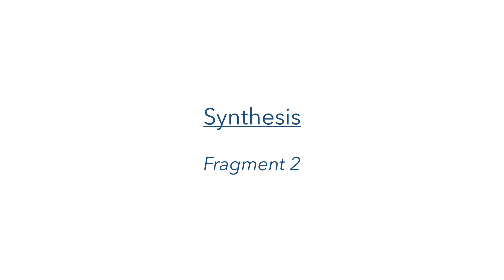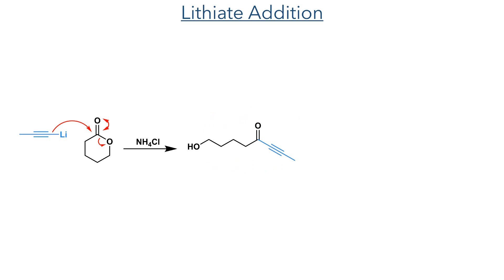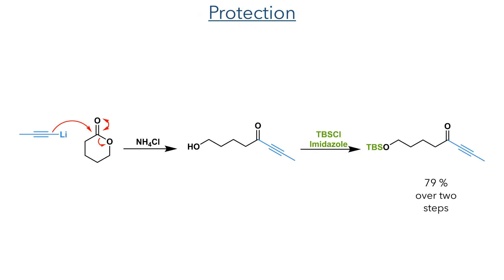To synthesise fragment 2, propionyllithium was added to delta-valerolactone, opening up the ester to form the acyclic intermediate. The resulting hydroxyl group was then TBS-protected in a 79% yield over two steps.